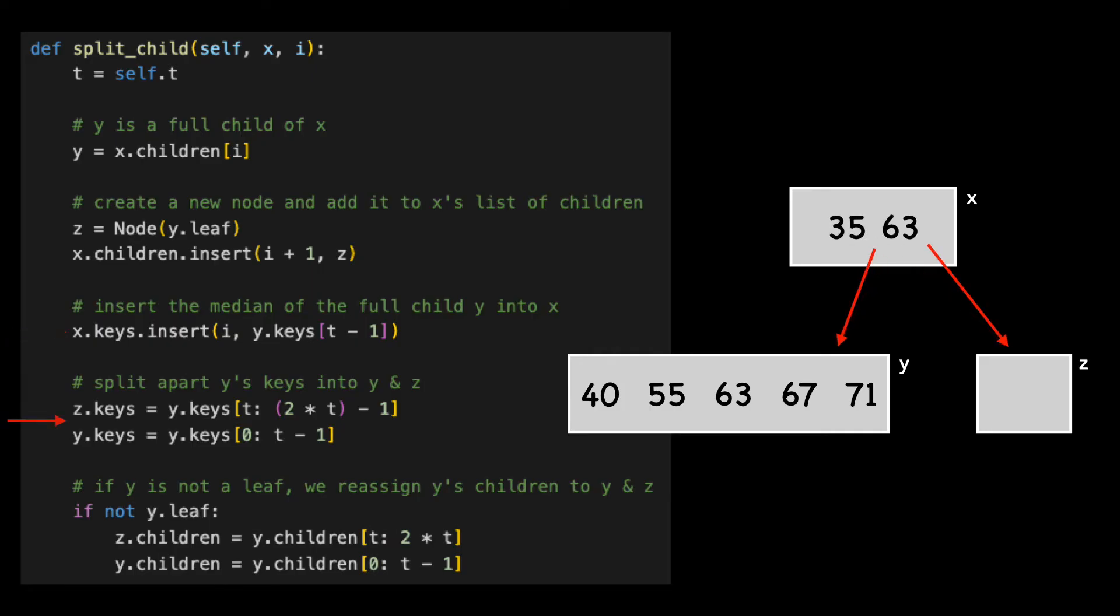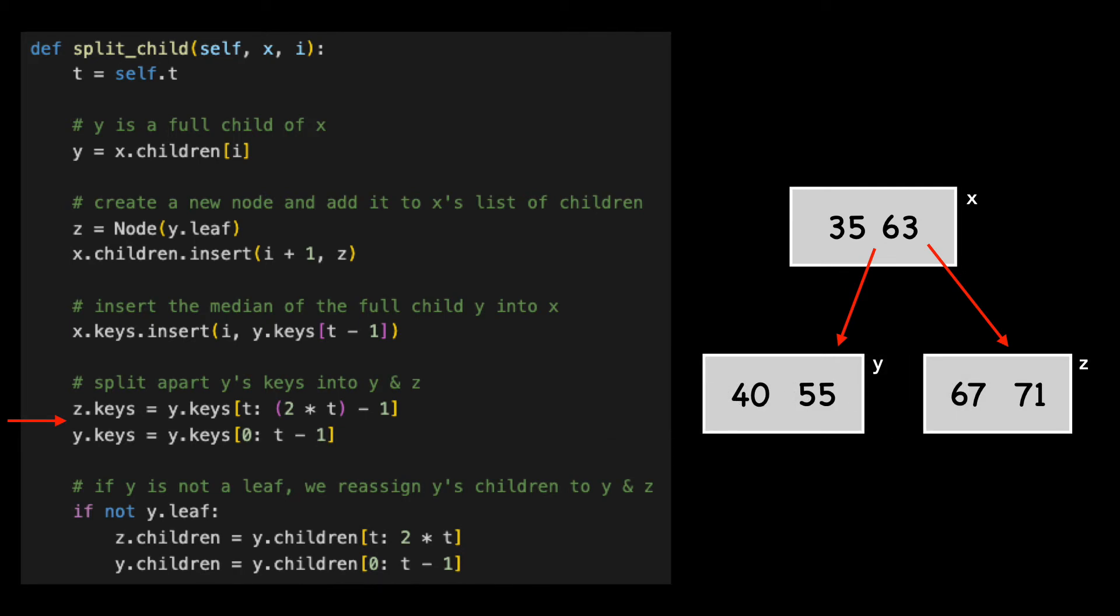We split Y's keys apart into both Y and Z, except the median, which just moved up to the parent. Finally, if Y is not a leaf node, we reassign Y's children to both Y and Z.